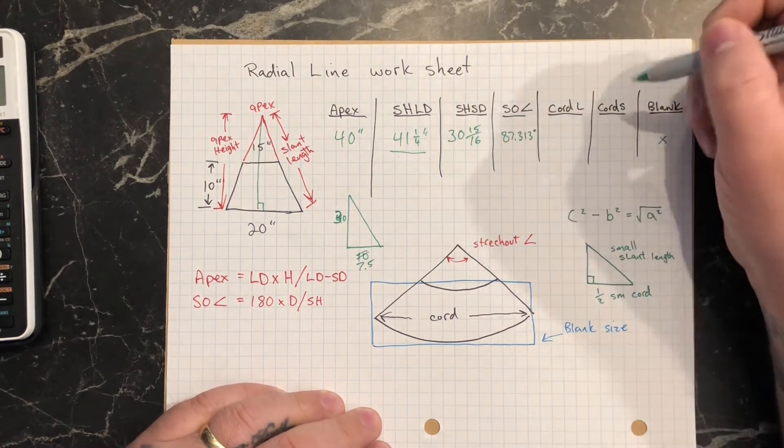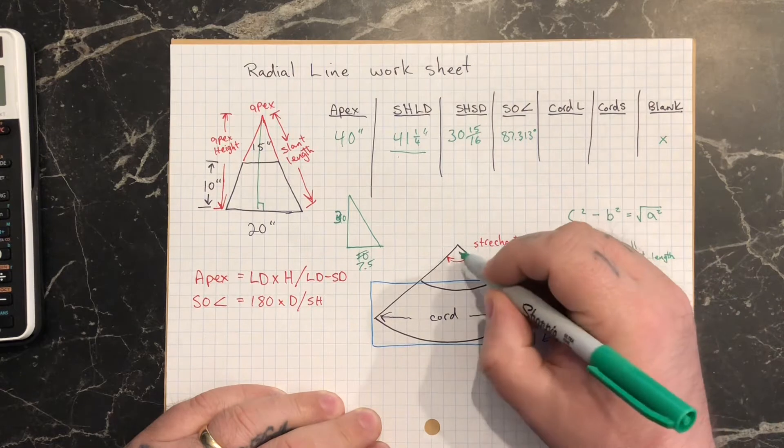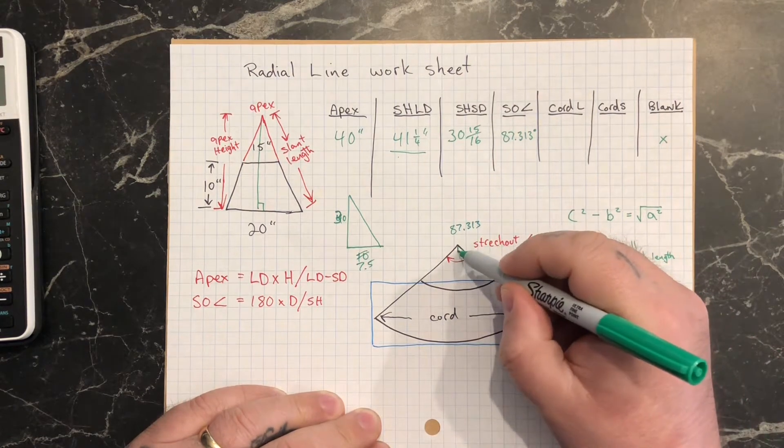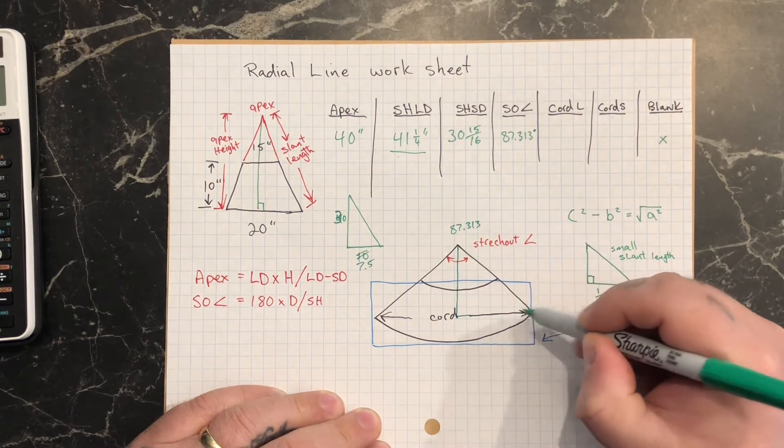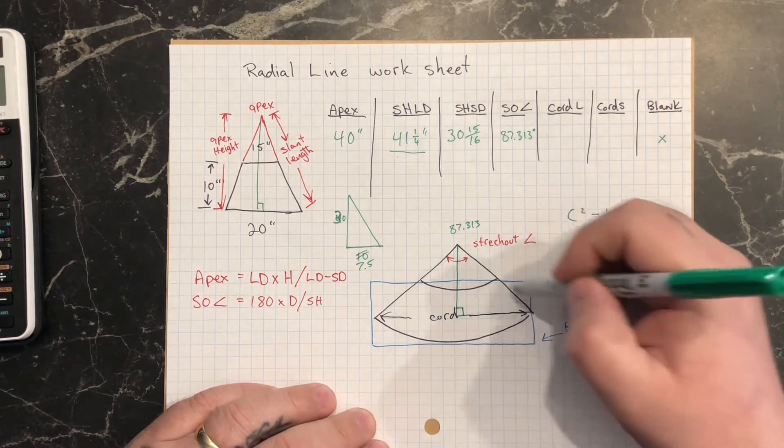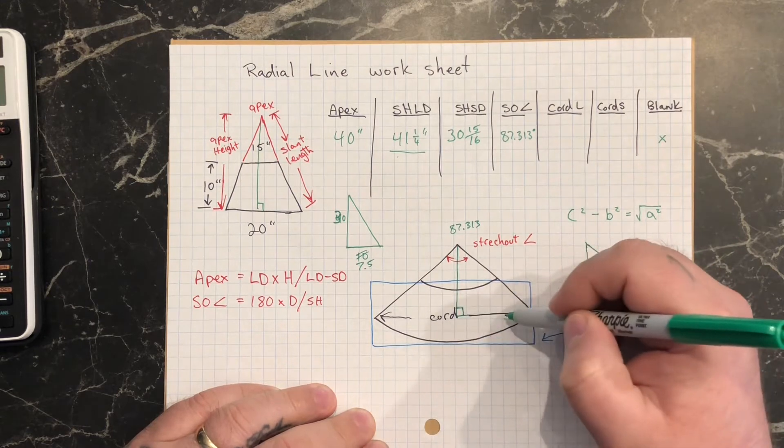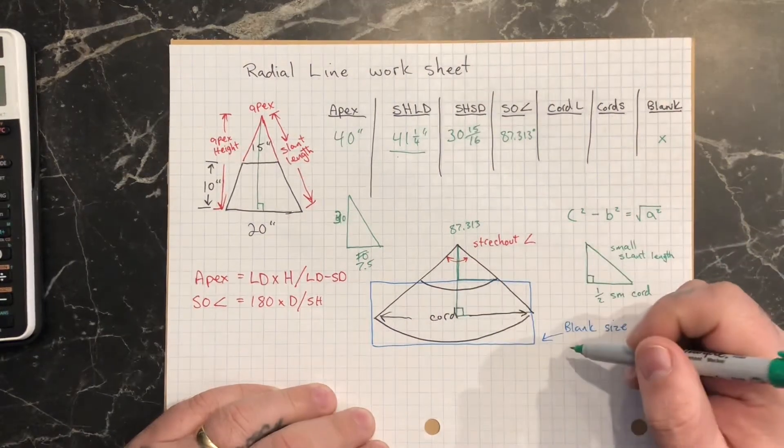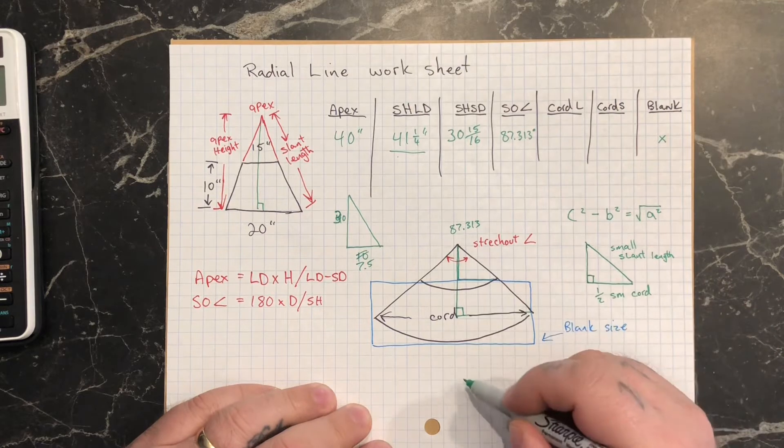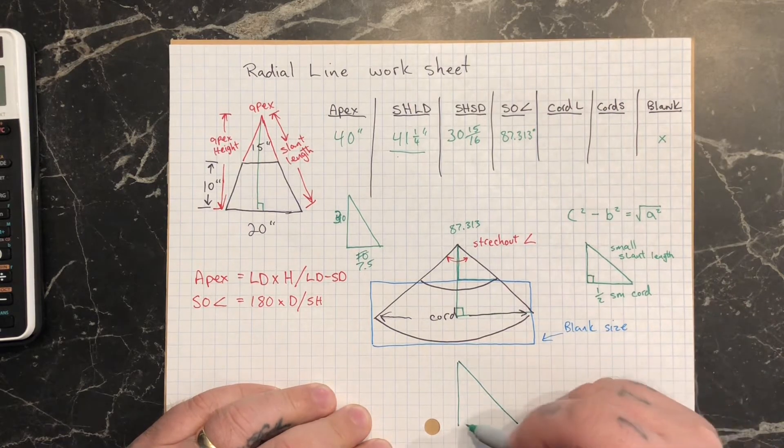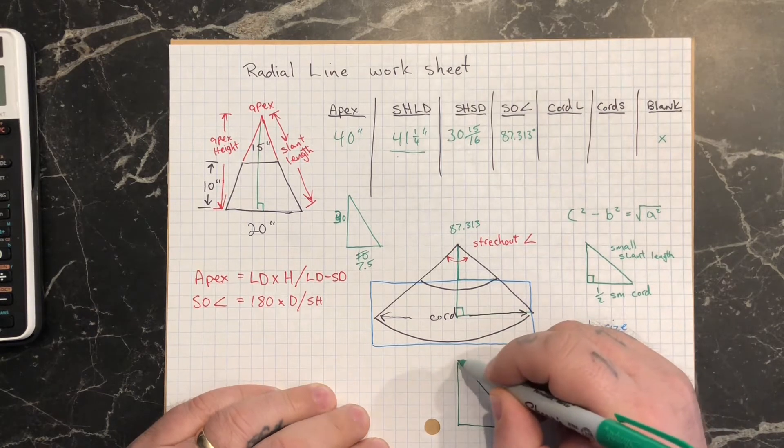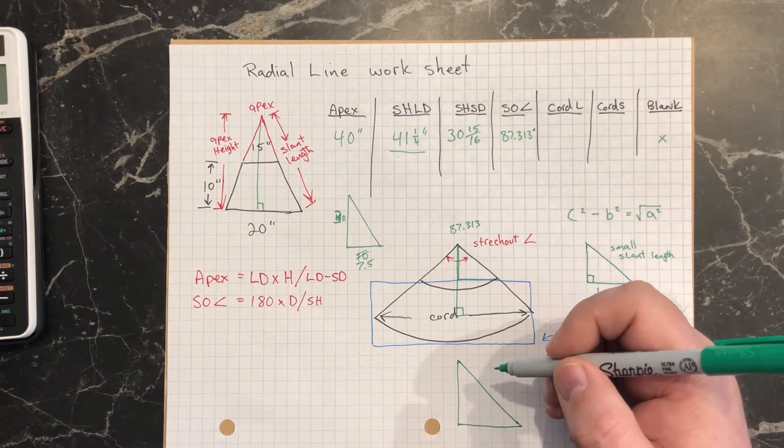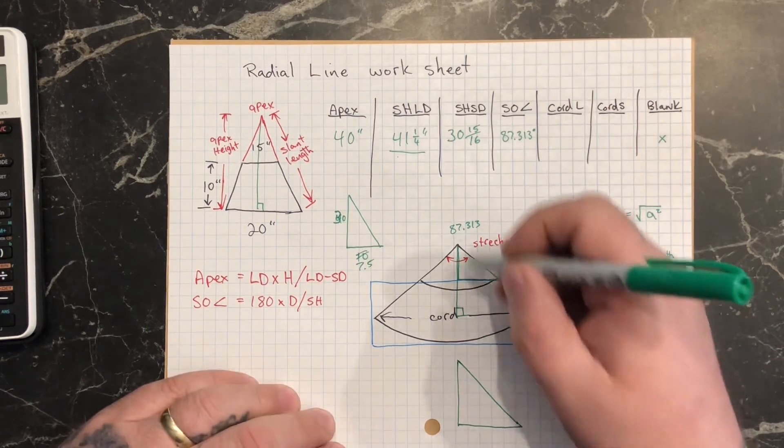And with that stretch out angle then I can find out these chord lengths. So this is 87.313. And remember doing a chord length, if we draw a triangle in here, then I can actually figure out this chord or half of the chord length. And I can do the same thing for the small side. A little triangle in there, it's going to figure out half of the chord length. So here we have an angle, it's going to be 87.313 divided by 2, because we've cut the angle in half. So now we have an angle of 43.6565.